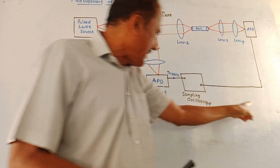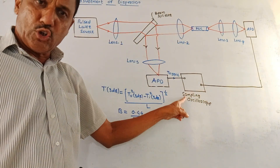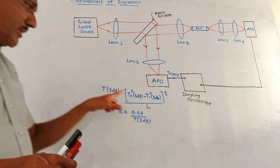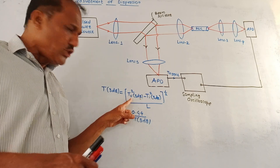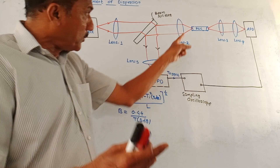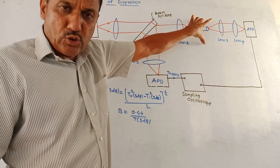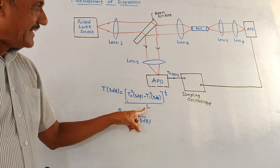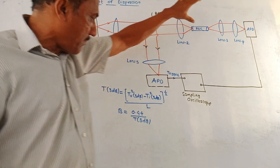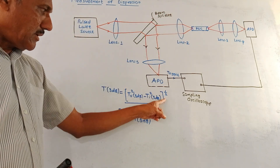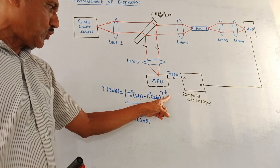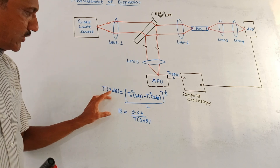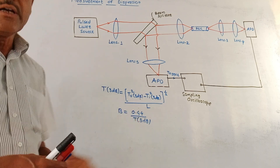At the output, lenses L3 and L4 and again an APD convert the optical signal into electrical signal. The output of this APD is given to another input of the sampling oscilloscope. Actual pulse dispersion is given by: T3dB = √(T0²₃dB − Ti²₃dB) / L, where T0 is the pulse width of the output pulse after propagating through the fiber optic cable, Ti is the pulse width of the input pulse, and L is the length of the fiber optic cable. Bandwidth is calculated as B = 0.44 / T3dB.